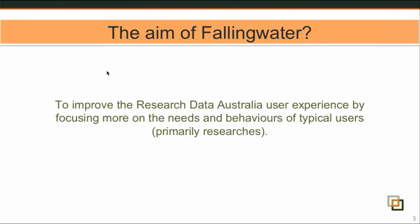Release 15, so Project Falling Water. There were quite a few aims behind Project Falling Water, but the main one was to improve the Research Data Australia user experience by focusing more on the needs and behaviours of typical users, which we identified as primarily researchers. So up until Release 15, we've really been focusing on getting content into the registry and Research Data Australia. And now we're switching gears and trying to focus more on what the researchers want and how we can deliver that in the best way.